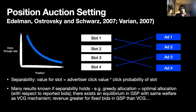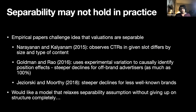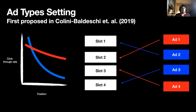What do I mean by separable? It means simply that the advertiser's value for a slot is the product of the click value times the probability of the slot, and they all agree on the click probability of the slot. If you make this assumption, you get the standard position auction setting, which is really well known with a lot of nice results. In particular, a greedy allocation and optimal allocation with respect to the bids are the same, and there's an equilibrium in GSP with the same welfare as the VCG mechanism. But unfortunately, separability probably doesn't hold in practice — there's a lot of empirical work pointing to this.